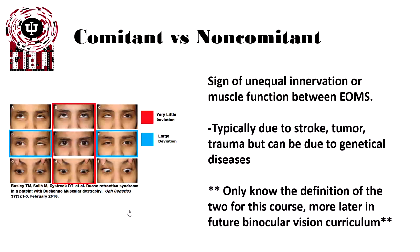Non-comitance is a sign of unequal innervation of the muscle or muscle function between the extraocular muscles. Typically this is due to stroke, tumor, or trauma, but it can also be due to genetic diseases. For the purposes of this course, you'll only need to know the definitions of comitant and non-comitant. You will not need to know anything else for it — there will be later curriculum on it in the binocular vision courses.